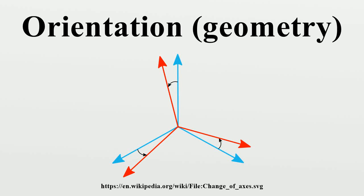In geometry, the orientation, angular position, or attitude of an object such as a line, plane, or rigid body is part of the description of how it is placed in the space it is in.